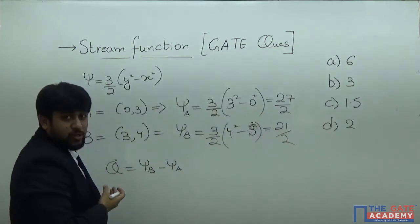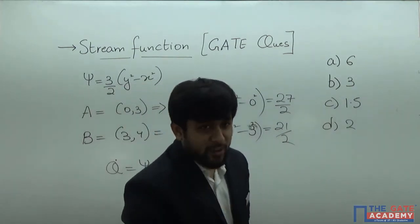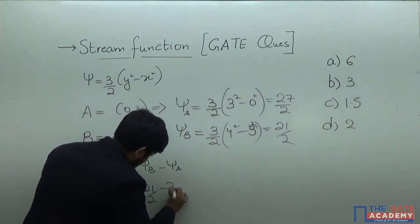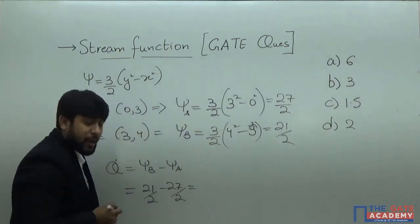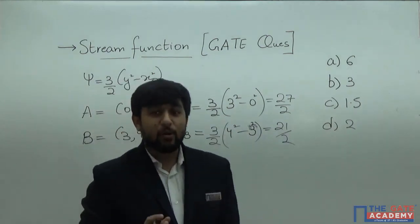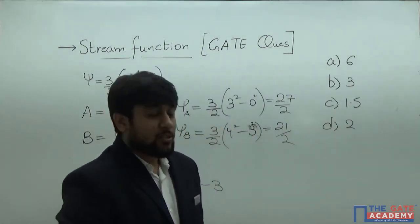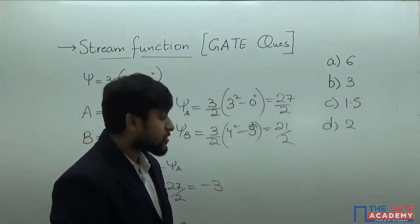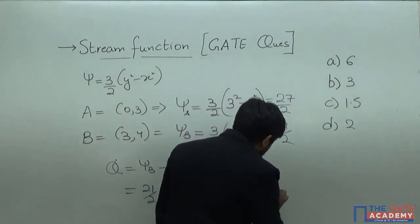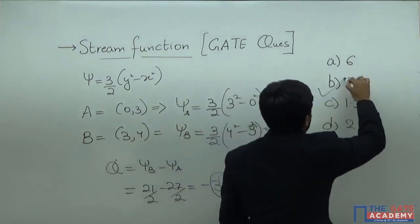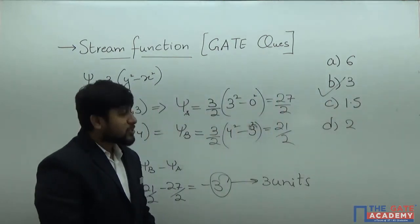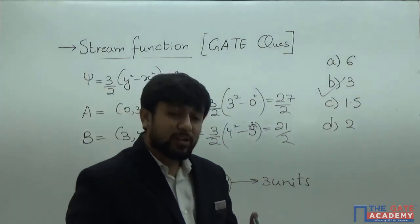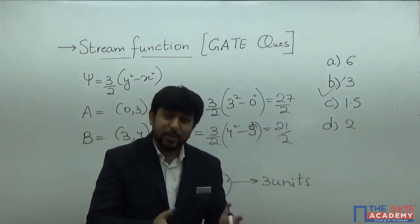Discharge per unit width is psi_B minus psi_A equals 21/2 minus 27/2 equals minus 6/2 equals minus 3. Do not be concerned about the negative sign when talking of magnitude of discharge — the sign gives the direction. So discharge magnitude is 3 units. The correct answer is option B. These two videos together give an idea of what stream function is and what types of numericals can appear in the GATE examination.